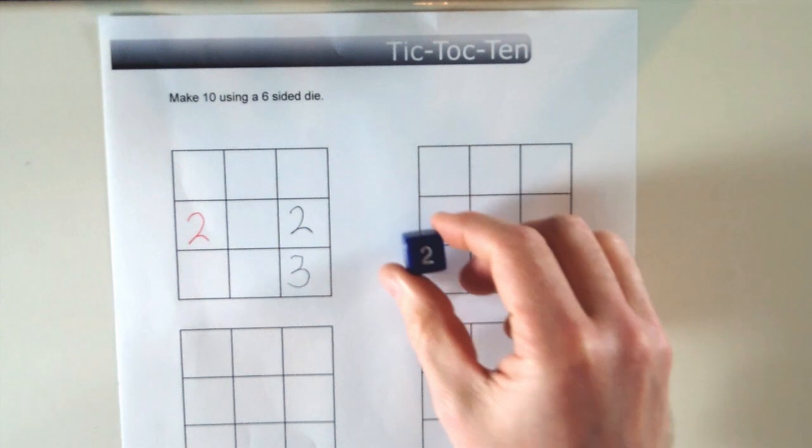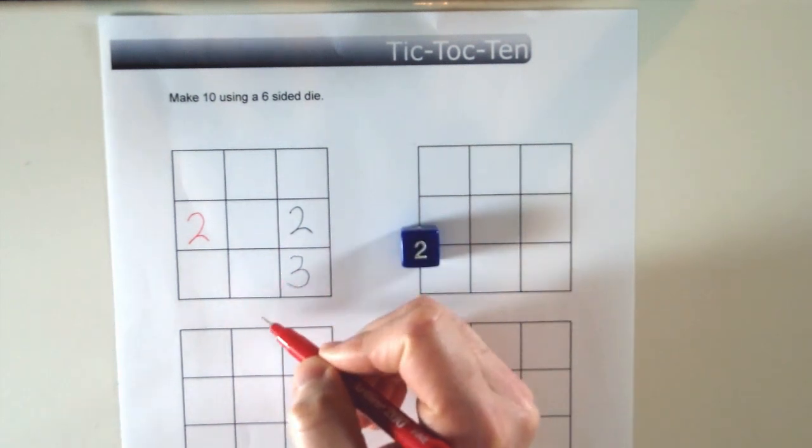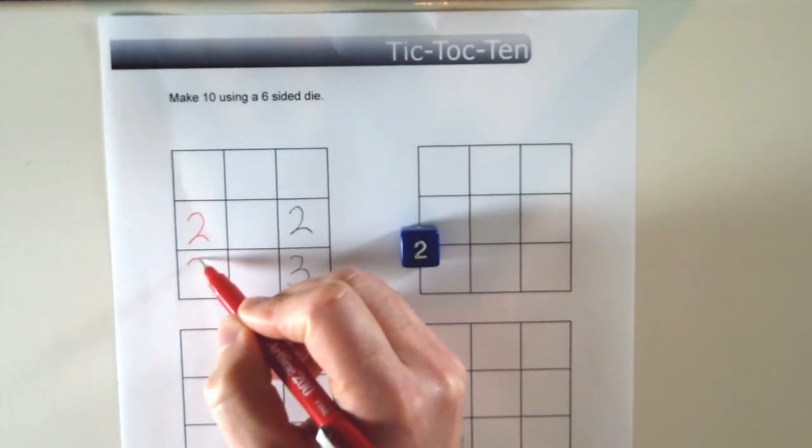Player 2 rolls, they've rolled a 2 again. They're going to put the 2 here.